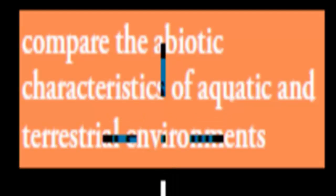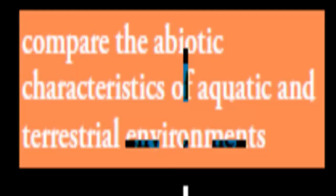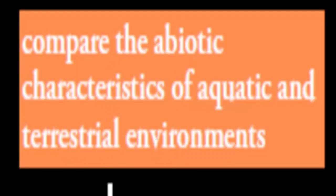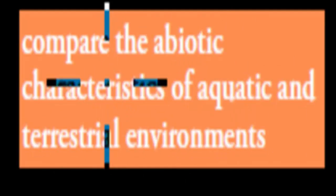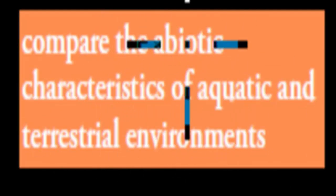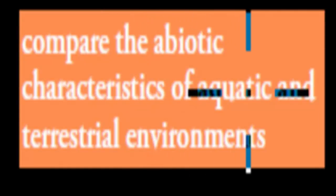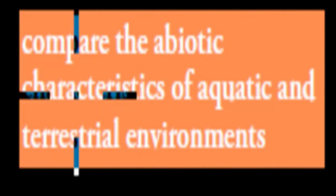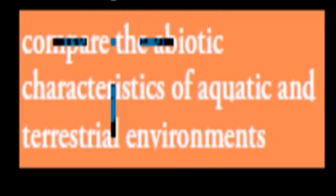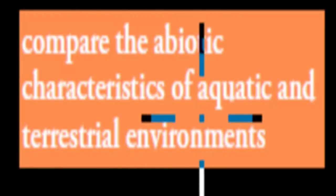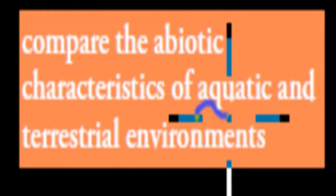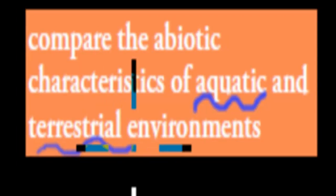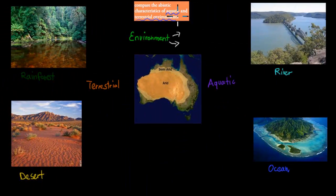Welcome to the first video of the Local Ecosystem Module. In this video I'll cover the first dot point which says: compare the abiotic characteristics with aquatic and terrestrial environments. Before I start discussing this dot point in detail, I'll go over what aquatic and terrestrial environments actually are, because you need to know that to be able to answer the dot point. Then I'll go into the dot point itself.